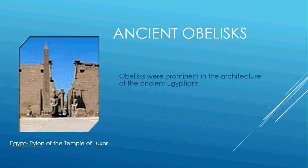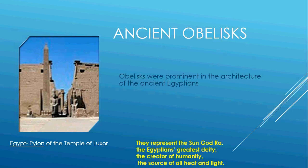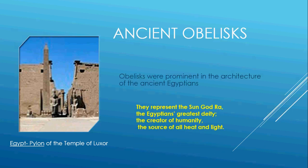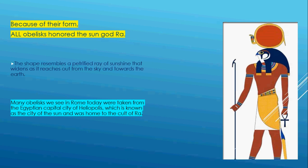Here are some ancient obelisks — they were always at the entrance of the temple. Here's one at the entrance of the temple at Luxor. They represented the sun god Ra, Egypt's greatest deity, said to be the creator of humanity and the source of all heat and light. Because of their form, all the obelisks honored the sun god Ra, and the shape was like a sun ray.